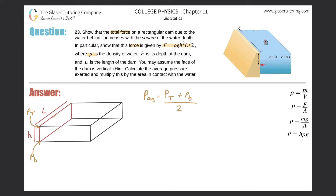The pressure the dam experiences at the very top is actually zero. Looking at this formula — pressure on a vertical surface equals depth times density times gravity — the height at the top is zero. Substituting in: P average equals the height at the top (which is zero) times ρg, plus the height at the bottom times ρg, all divided by two.